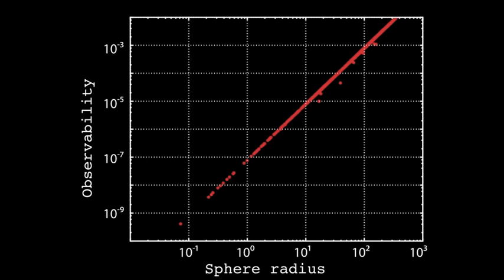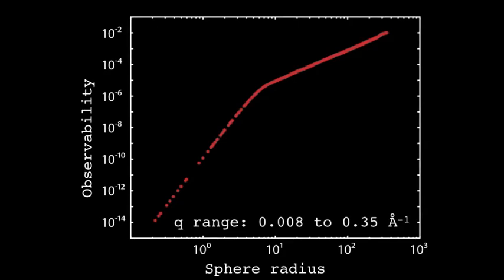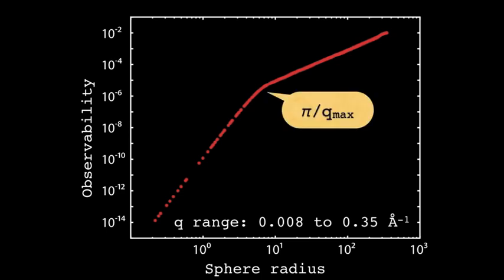The intensity scaling law would lead you to expect a radius to the sixth power here, but instead we see a radius squared behavior in the observability. This means the effect of the different scattering patterns compensates quite significantly for the volume scaling. Furthermore, if we limit our q range to a maximum of 0.35 inverse angstroms — where normal small angle scattering patterns peter out — we see a bend in the observability at pi over q_max.